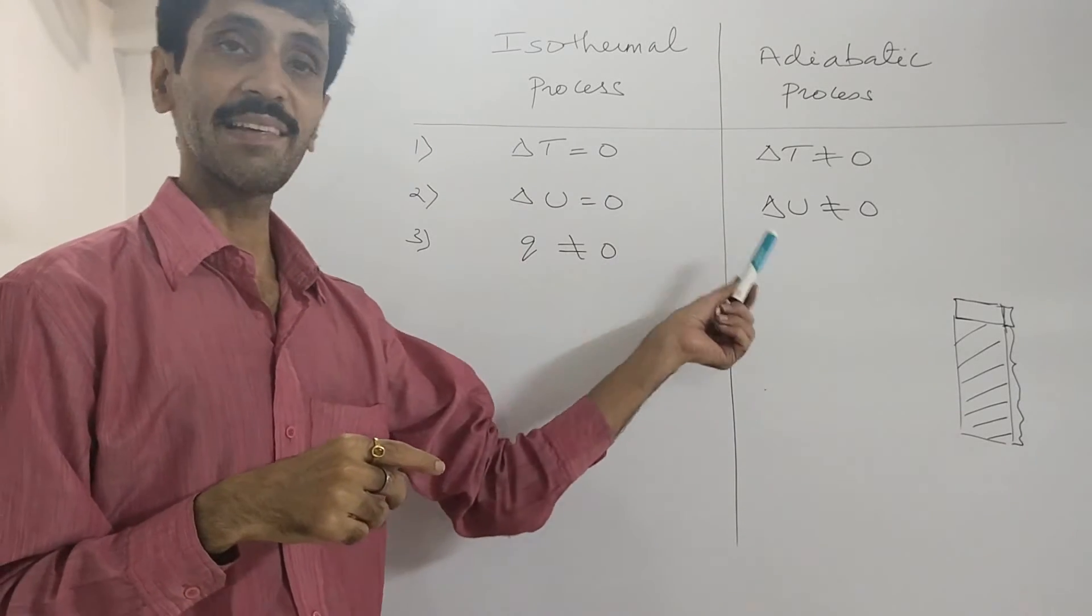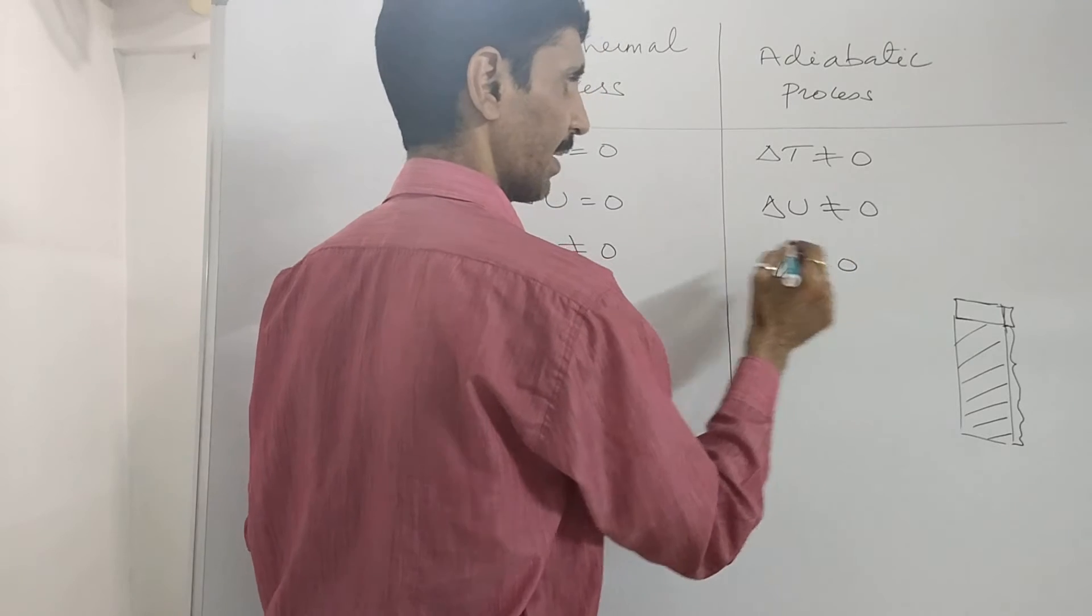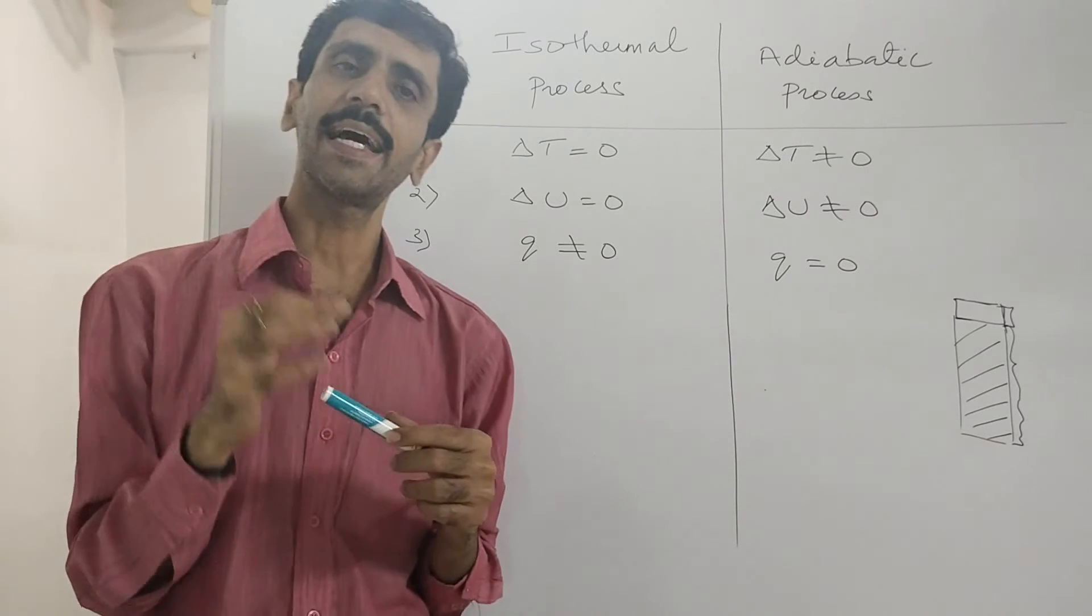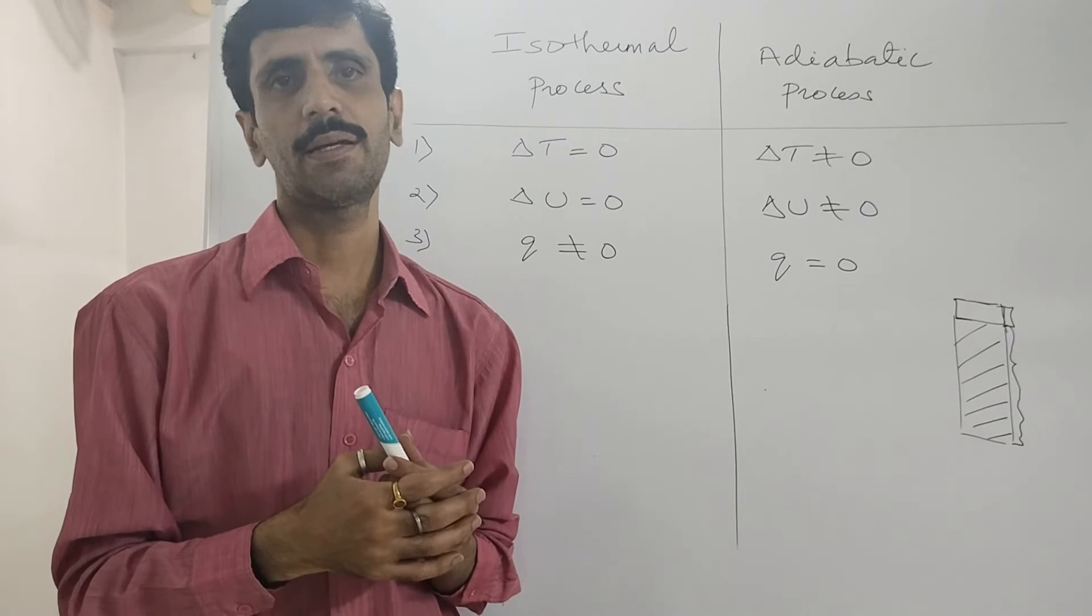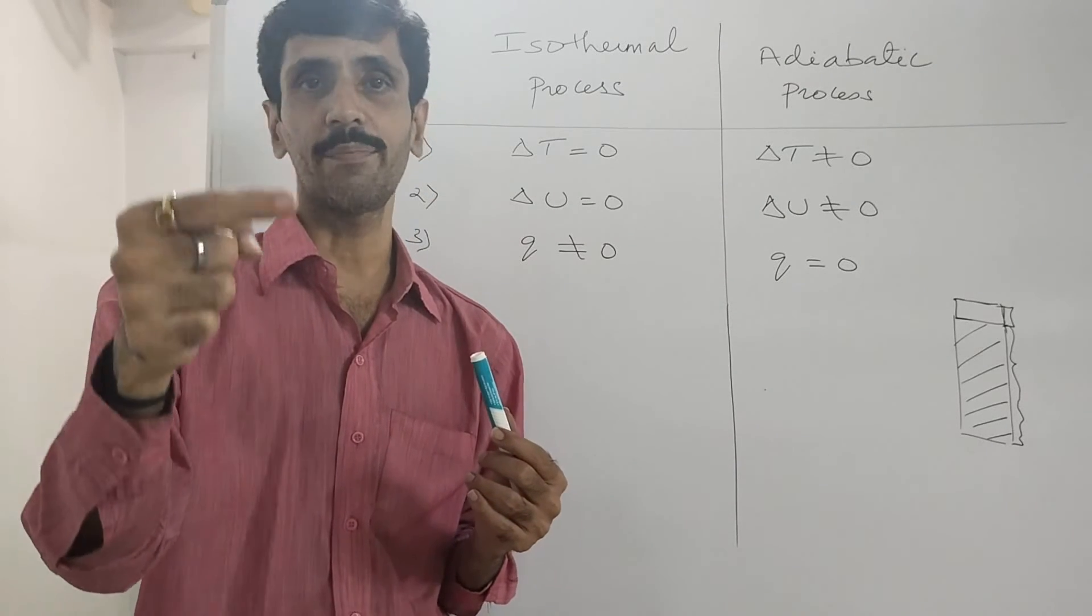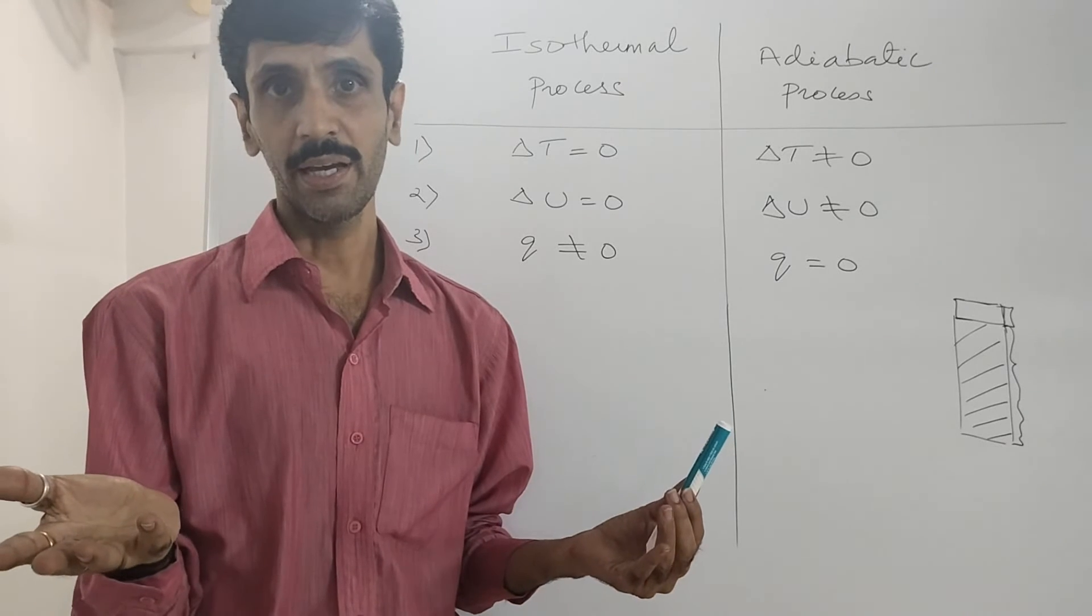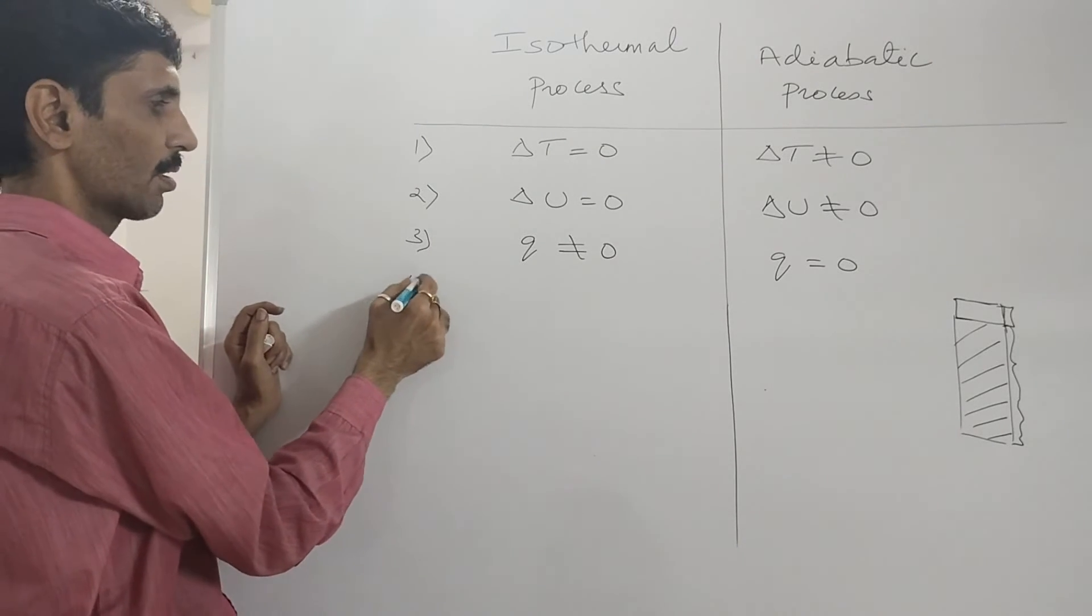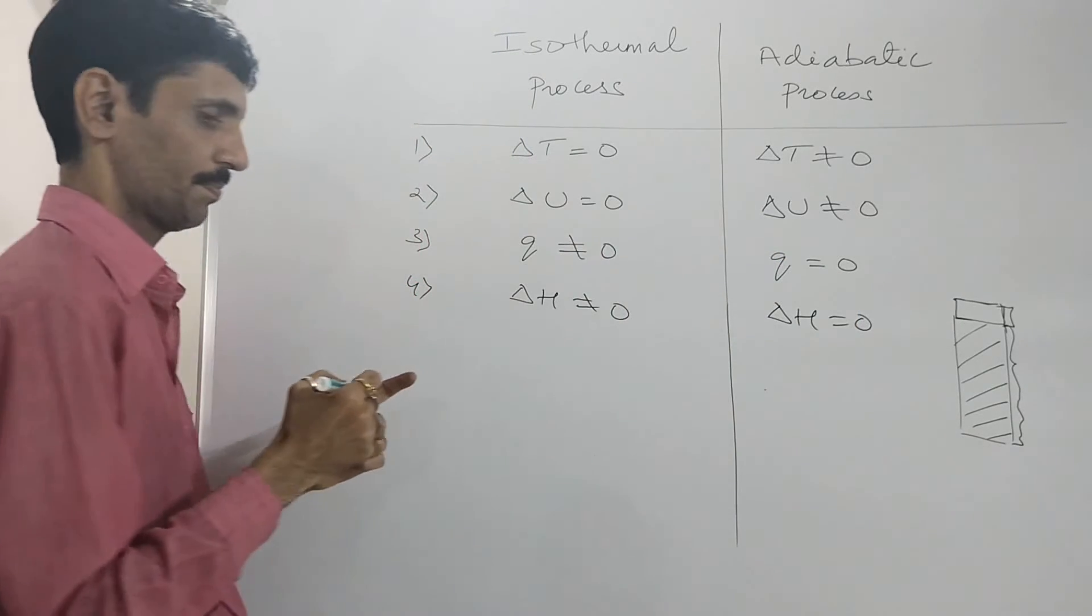And therefore the third point is Q is not equal to zero. Here but as I already said in my previous video there is no exchange of heat so that means it doesn't have any value and if there is no value then we say Q is equal to zero. Next point is change in enthalpy. Enthalpy is the total heat content of the system. So the change in the enthalpy is a function of Q just like internal energy is a function of temperature. So if Q is zero then delta H is zero. And therefore we come to the fourth difference and that is delta H not equal to zero here but delta H is equal to zero.